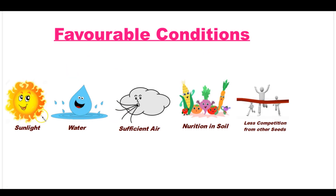In the absence of any one of these five conditions, a seed cannot dominate, cannot settle, and cannot become a new plant. So these five favorable conditions are very important for a seed to grow into a new plant.